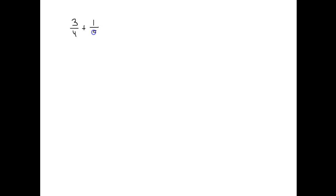Let's do one with fractions next. Although eliminating fractions is an optional step, I want to show you how to handle it. The equation is: three-fourths plus one-fifth x minus one-half equals four-fifths x. You can solve it using fractions as-is, but I'm going to go ahead and eliminate them by looking at all the fractions in the equation.